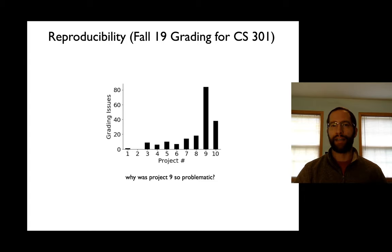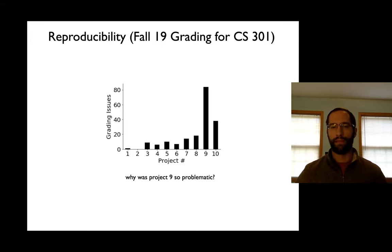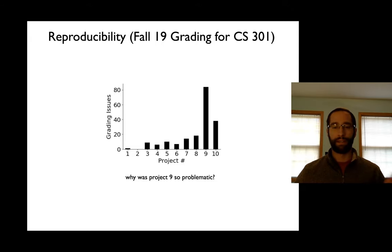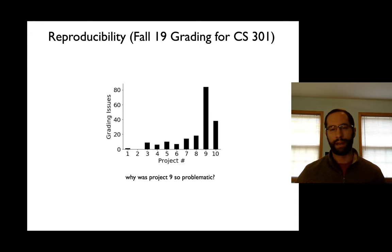Let's look back at the last course, CS 301 or 220. In that one, people would submit projects and at the end of the semester I had a form that people could fill out if they thought there were issues with one of their projects. This was showing how many issues people had across each project, and project nine was by far the most problematic. Maybe some of you had issues with that — think back to what was tricky about that one.